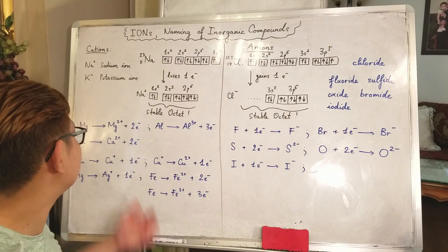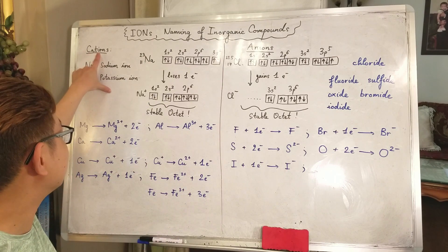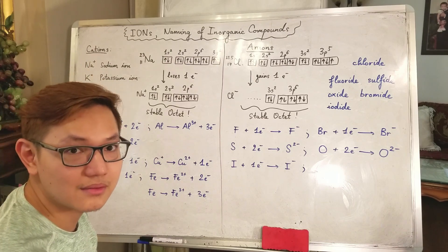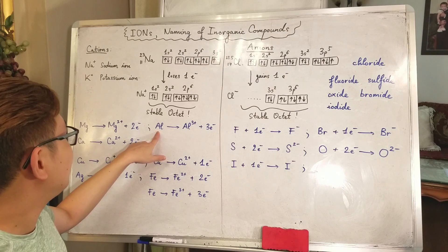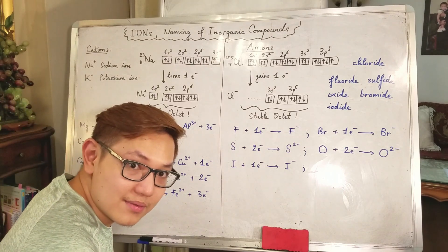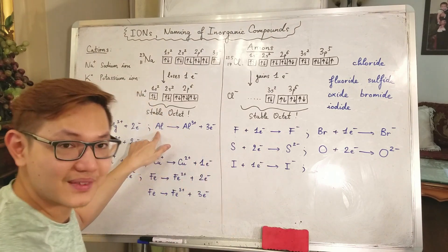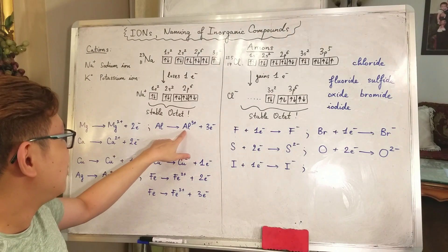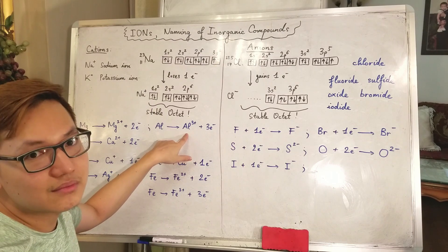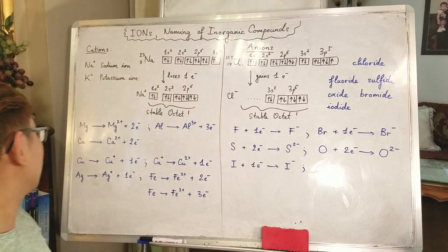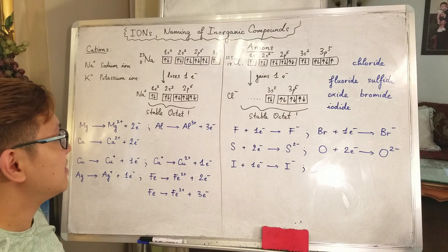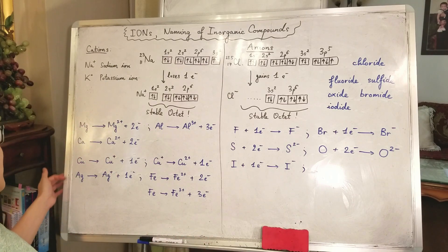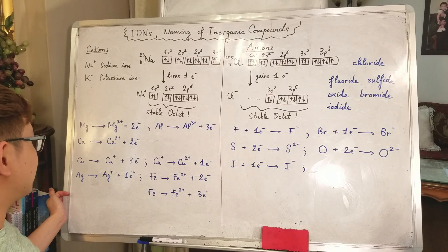You can also call these cation. Cation means positive ions. In this way, aluminum, which group does it belong to? Group 3. So it will lose 3 electrons to become aluminum 3+ cation or ions if you wish. That's all the easy ions. I mean the easy cations. Following are the more difficult ones.